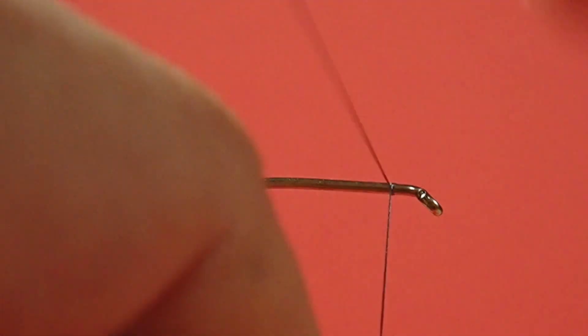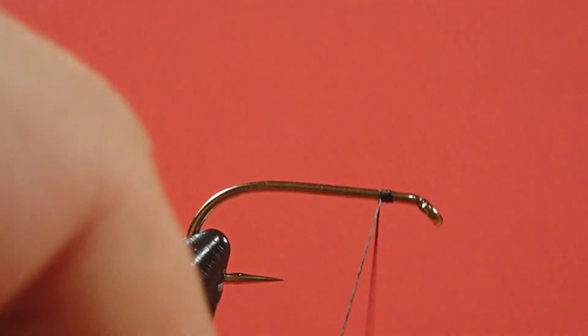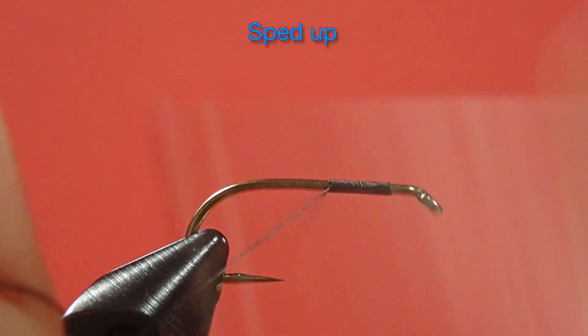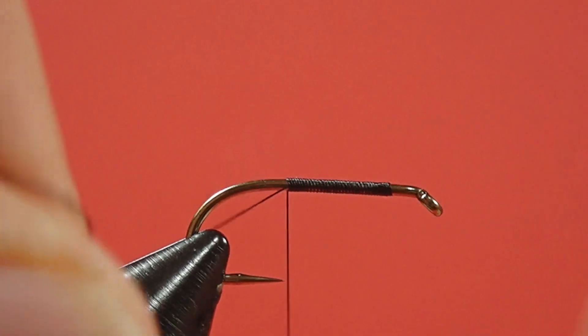So, let's get tying. Since this is a floss body, we have to be neat. Bring that up to the hook point.